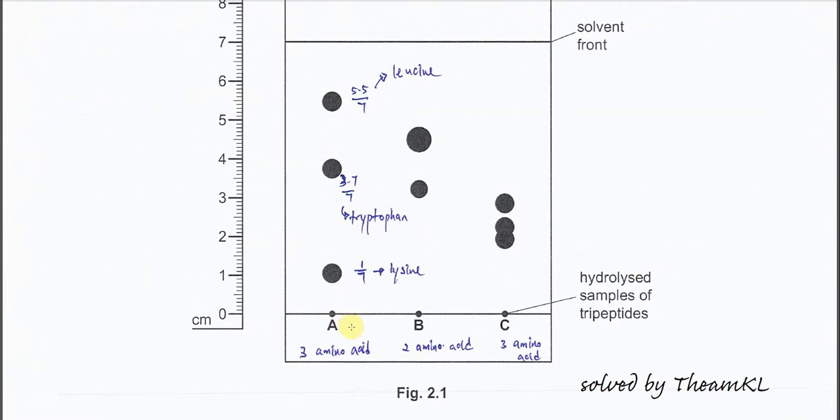For the sample A, we know that it must be three different amino acids because we have three different spots and three different retention factor. And for the B, we just get two spots, means two compounds. So it's quite clear that B just has two amino acids inside.